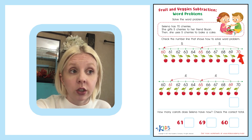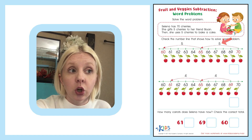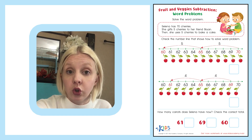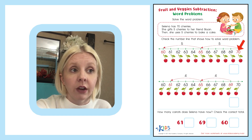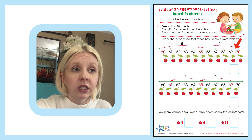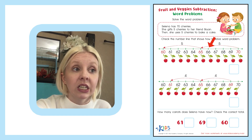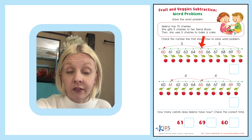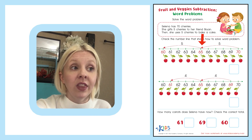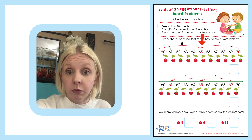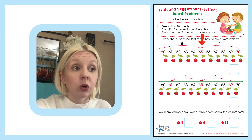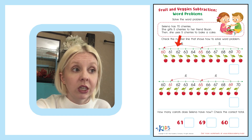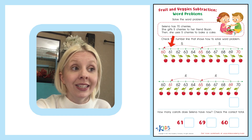This one starts on 70 and then it shows that we're going to subtract or jump 5. So we start at 70: 69, 68, 67, 66, 65. So now we have 65 cherries. Then she uses 5 cherries to bake a cake, so we have to subtract 5 again: 65, 64, 63, 62, 61, 60.